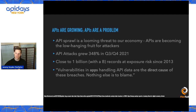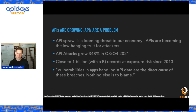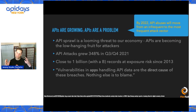Close to a billion records are at exposure risk since 2013 — that's one of the high-level conclusions from our research. When we look back over the last decade from 2023, it really is around that 2013 timeframe. The first disclosure we saw was in 2011 of an API-based data breach, but it's just over a decade that we've been tracking.